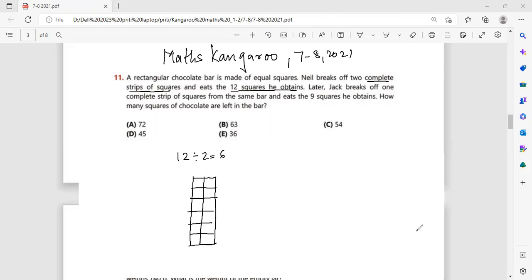And then later on, Jack breaks off one complete strip of squares from the same bar and eats the 9 squares he obtains. Now it is saying that it is a rectangular chocolate bar. And if he had to eat nine squares, then he cannot be breaking the chocolate vertically. So that means he had to break the chocolate horizontally.